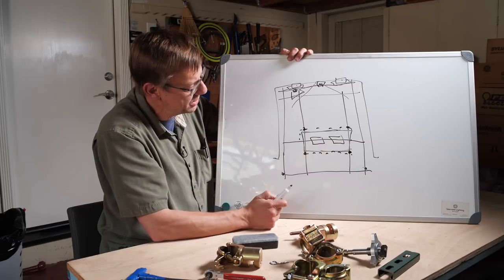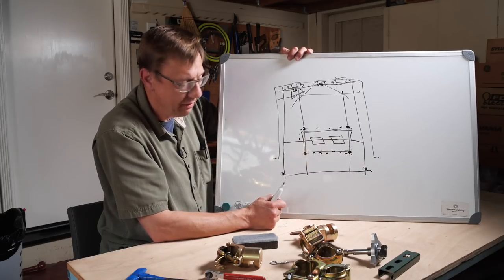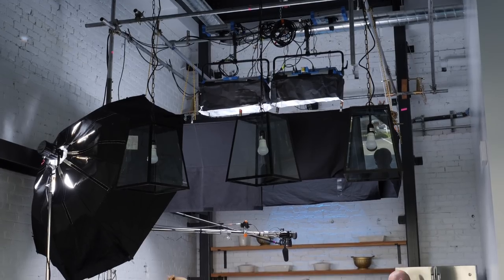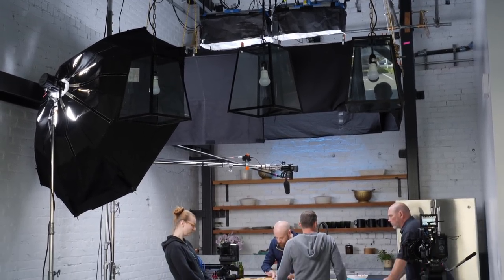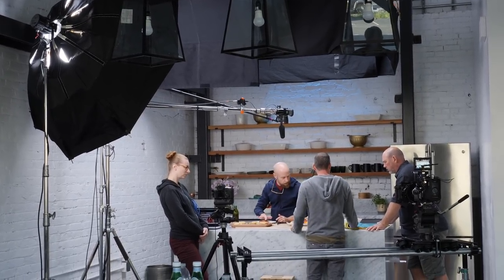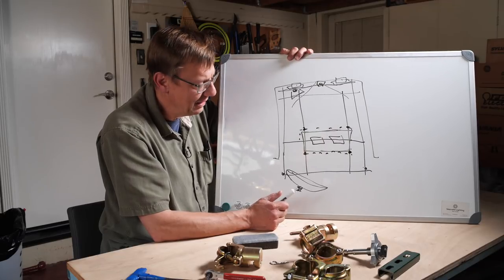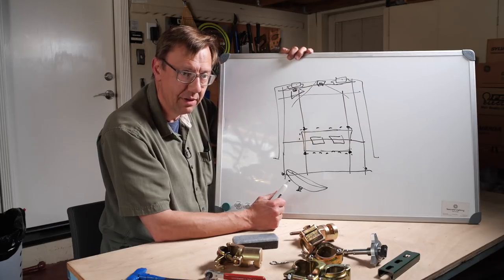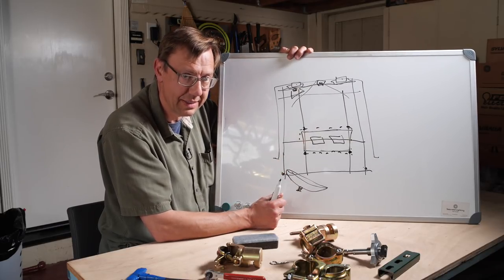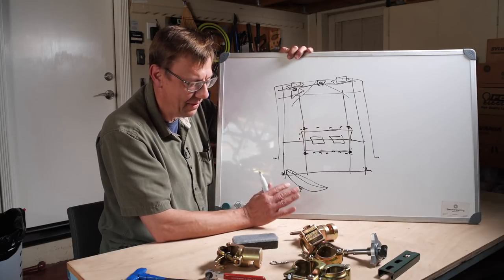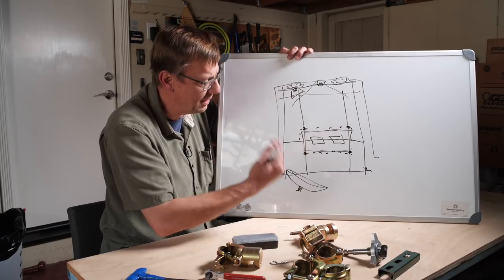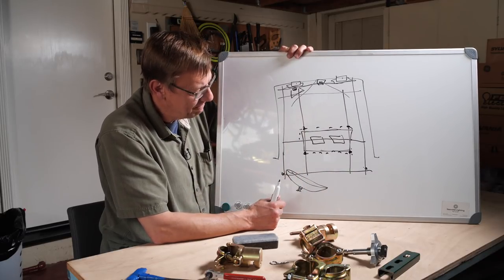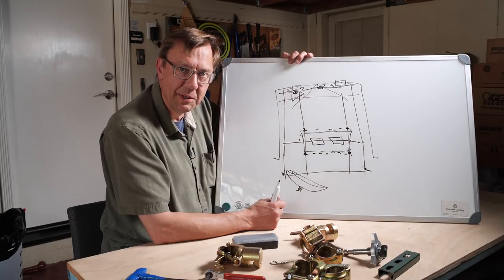So that was our general rig and approach. And then we brought in the key light, which turned out to be a five-foot octobank with an 800 Joker into that. Yeah, it worked out well. A little bit of planning and some time ahead of time - like a whole set day. That was great. And then on the day, we kept moving and could move quite quickly because we were all prepped to go. So that was that. Thanks for watching. We'll see you again next time.